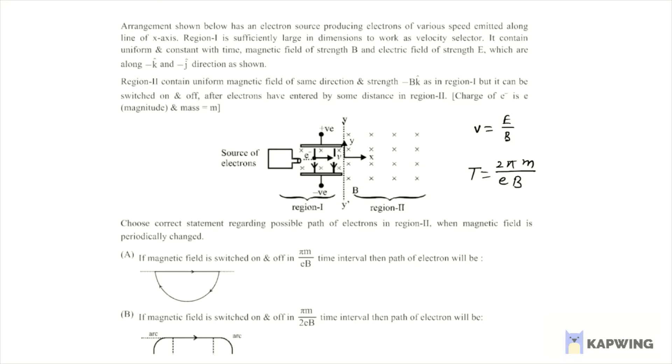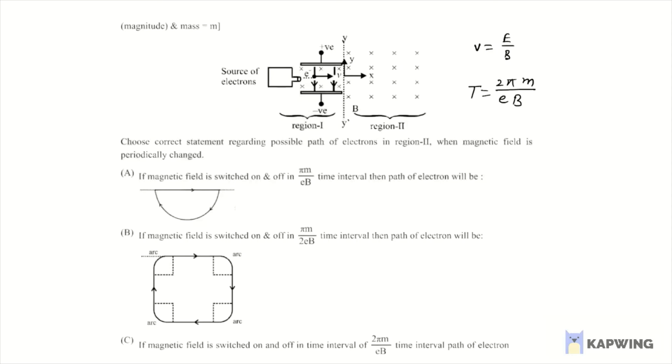So this must be the path. This is not correct. A is not correct. In this we have given the time interval π m by 2EB, which is one fourth of this time, so only one fourth circle can be completed.